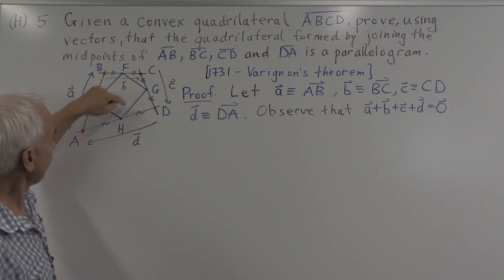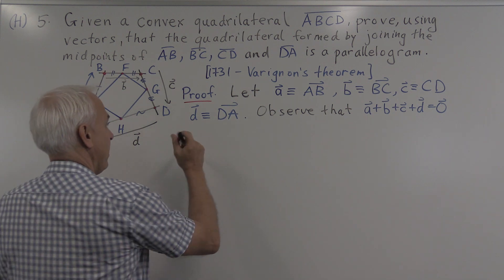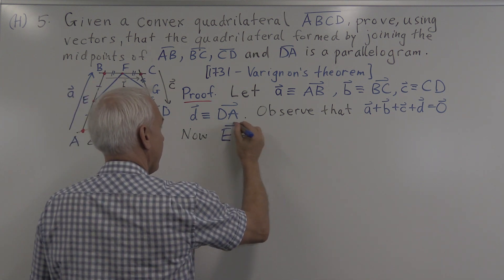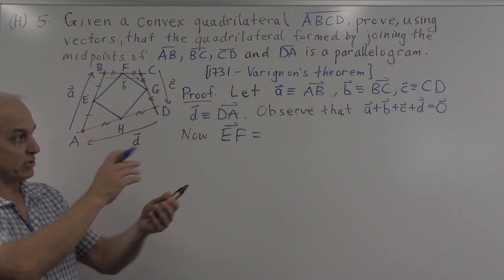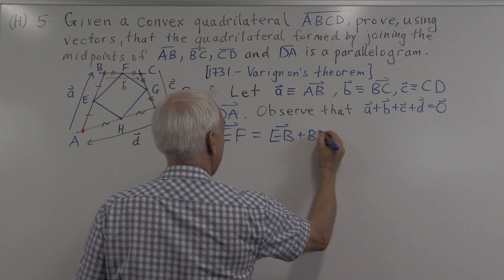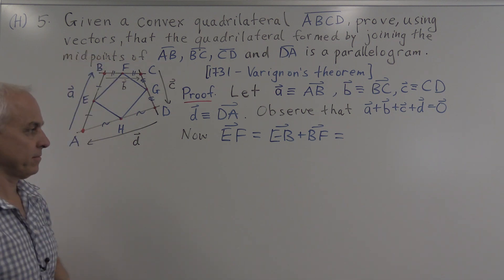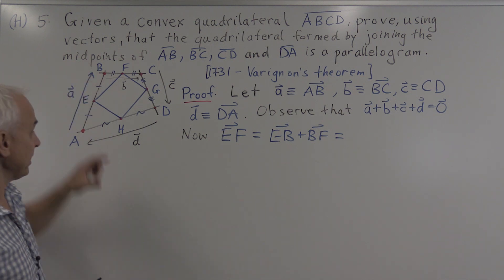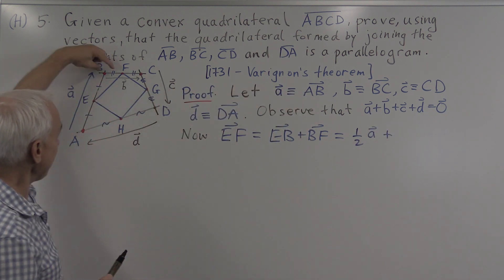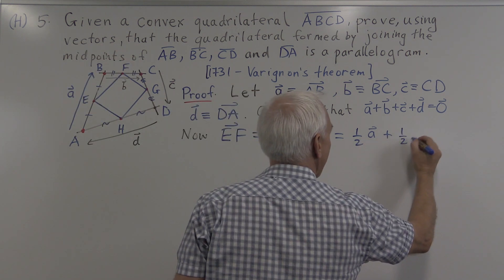Now let's look at the smaller quadrilateral formed by the midpoints and get a handle on it. Let's examine the vector EF. We can write EF as EB plus BF. To go from E to F, we go first from E to B and then from B to F. The vector EB is one half of A, since E is the midpoint of AB. And the vector BF is one half of B, since F is the midpoint of BC.